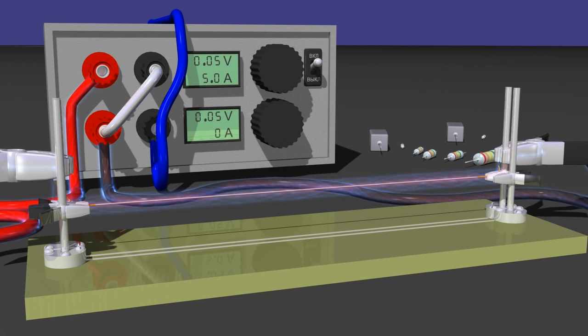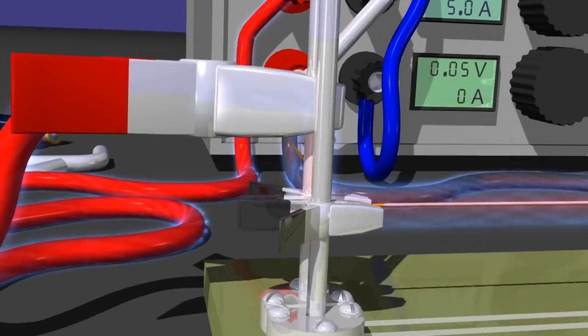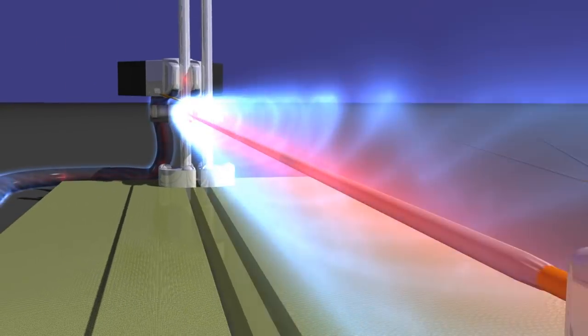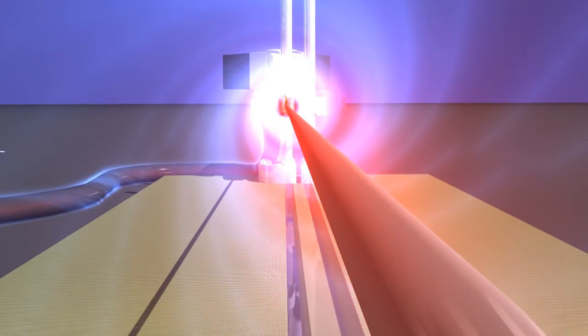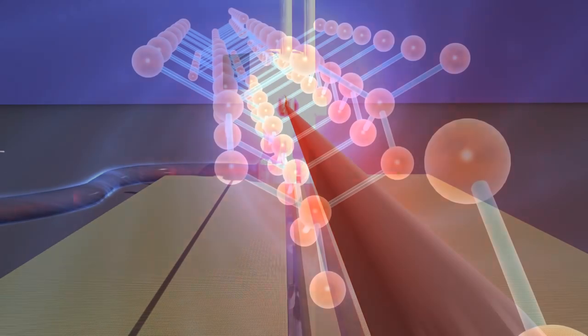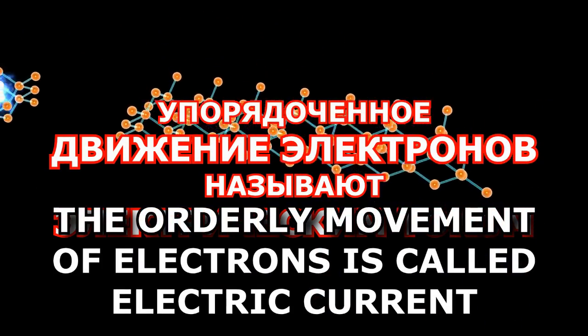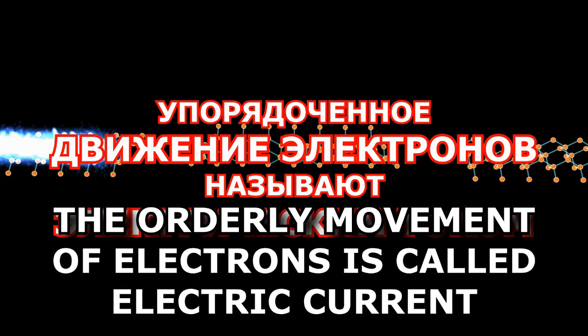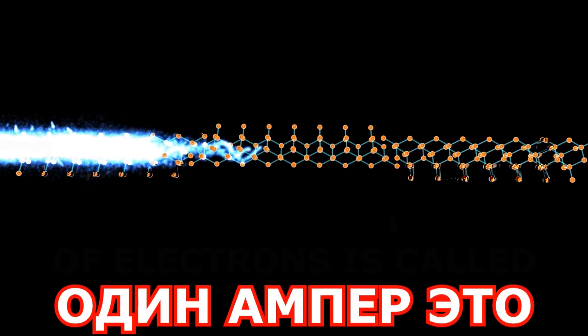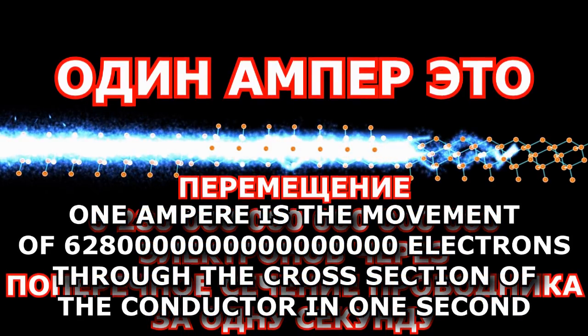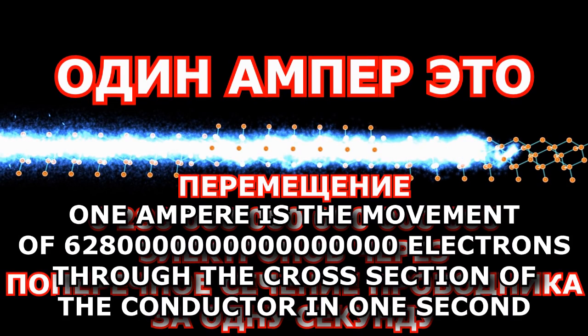Now let's talk more about all these numbers. The current is the amount of electrons that flows through the conductor in a given period of time. One ampere current means that 6,280 trillion electrons are flowing through the cross section of the conductor. Therefore, if the current is 5 amperes, 31,400 quadrillion electrons flow through the conductor in one second.